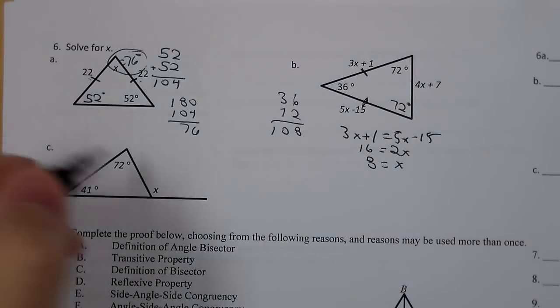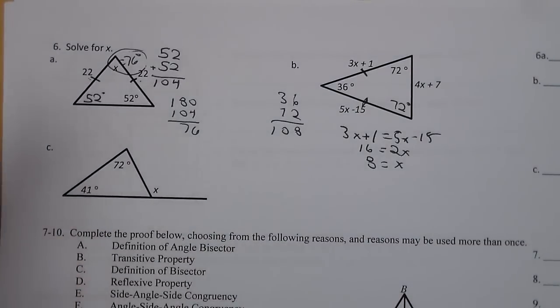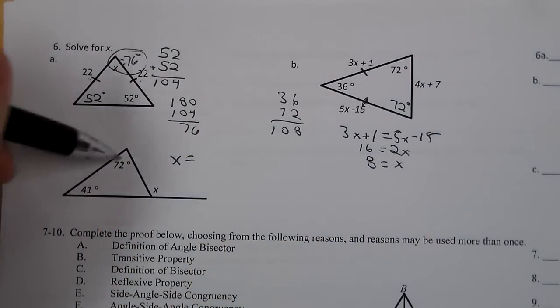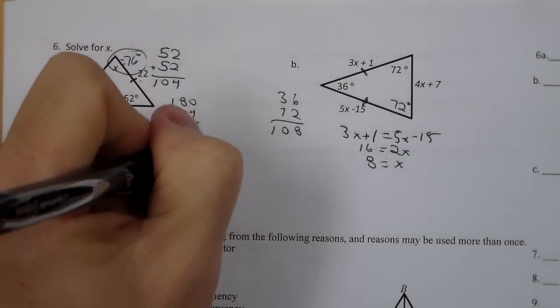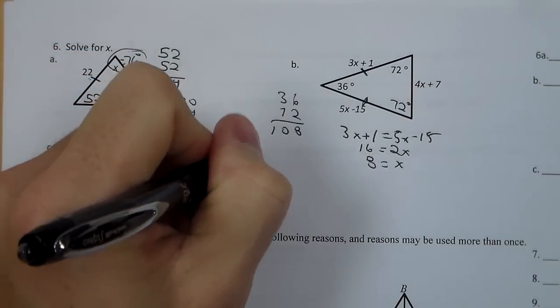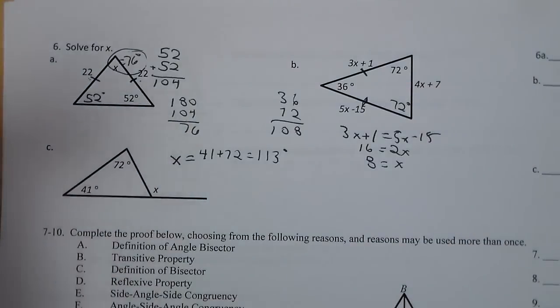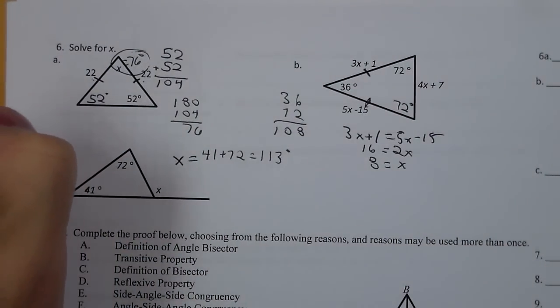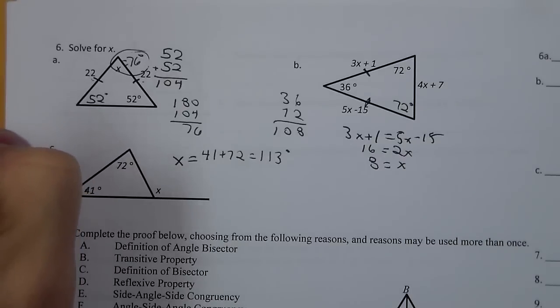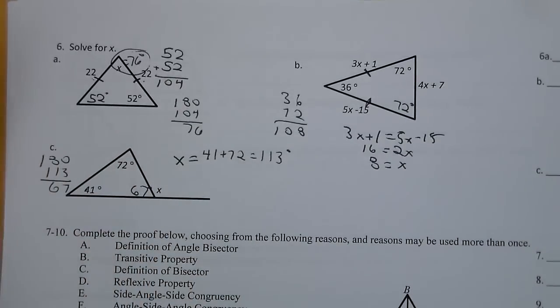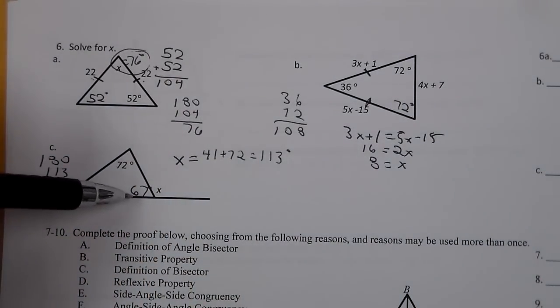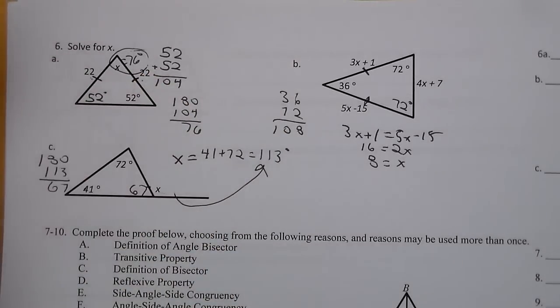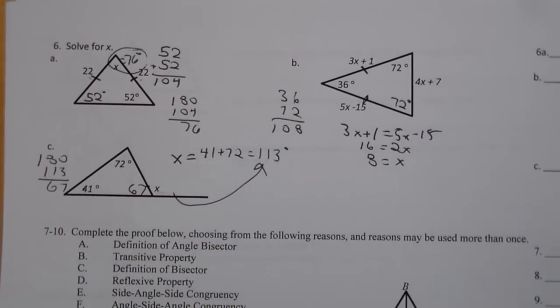Now for C, I kind of have two options here. The exterior angle theorem says that X is equal to the interior non-adjacent angles. So that would be 41 plus 72. But the reality is a lot of times we don't remember that property. You can get to it a different way. If I add these two together, I get 113. 180 minus 113 is 67, which figures out that angle, which is a common way we look at it. And then you can do 180 minus 67, which really still gets you to the 113. But sometimes we don't remember that rule. It still works.